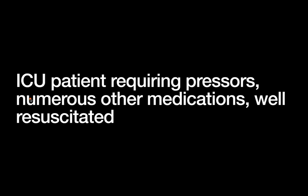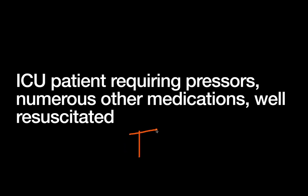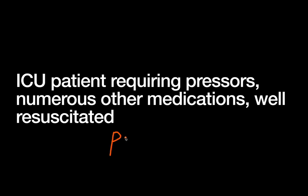Let's run through a few clinical scenarios. First: an ICU patient requiring pressors — which need central access — and numerous other medications, but who is well resuscitated and doesn't need rapid fluid administration. In this situation, the best choice is probably a triple lumen catheter — a relatively small line that gives at least three lumens to infuse multiple medications. The fact that you can't push fluids through it quickly is not a disadvantage here. Another option could be a PICC line, though that usually requires another team and more time.